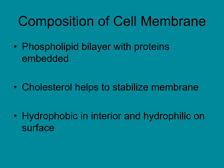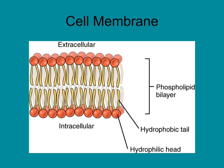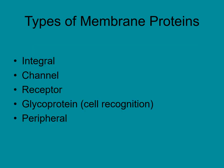In this diagram of the cell membrane, we have the hydrophilic heads of the phospholipids on the surfaces and the hydrophobic tails in the middle — two layers total. The proteins embedded in this membrane come in several different types: integral proteins, channel proteins, receptor proteins, glycoproteins, and peripheral proteins. All of these have specific functions or jobs.